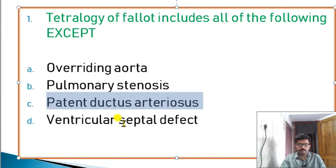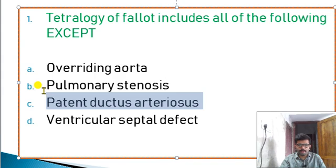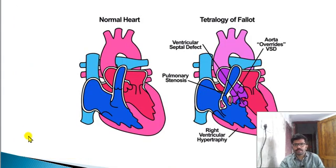During the fetal stage, the pulmonary artery — that is the ductus arteriosus — it is an opening during fetal life between the aorta and the pulmonary artery, allowing blood flow through the pulmonary artery.